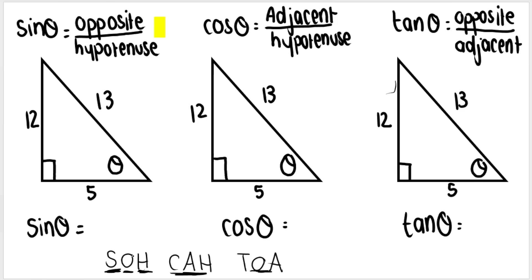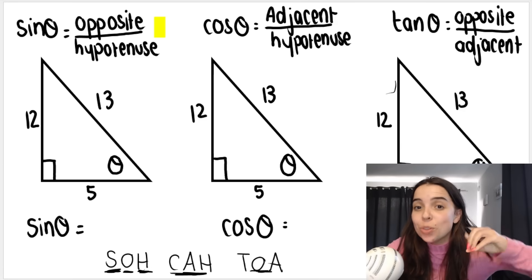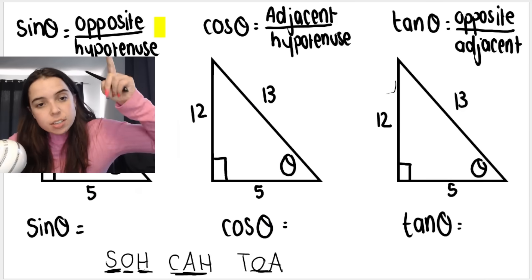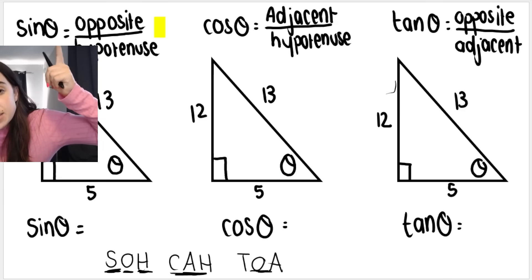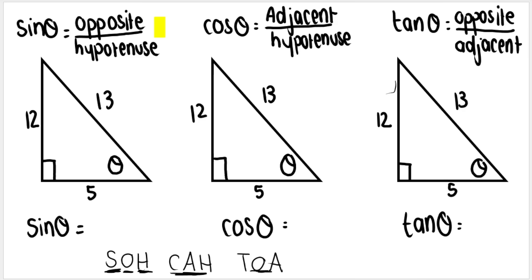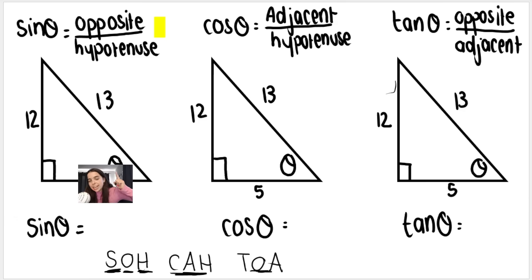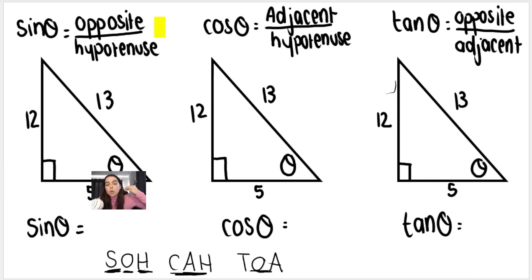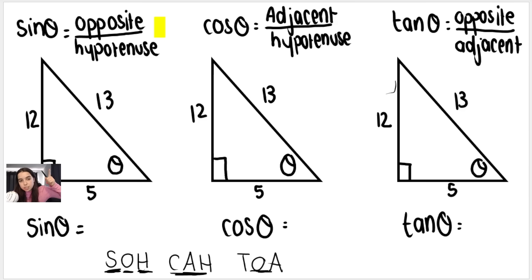Remember, when we're speaking about things like opposite, adjacent, and hypotenuse, we are speaking about the different lengths of the triangle relative to the angle we're talking about. So let's look at sine. Sine is opposite over hypotenuse. In this question I'm asking for sin of theta — that's my angle. You need to find your angle, which is over here, and ask yourself: what length is opposite my angle? Opposite is 12. The hypotenuse, opposite the 90-degree angle, is 13. So sin of theta is 12 over 13.